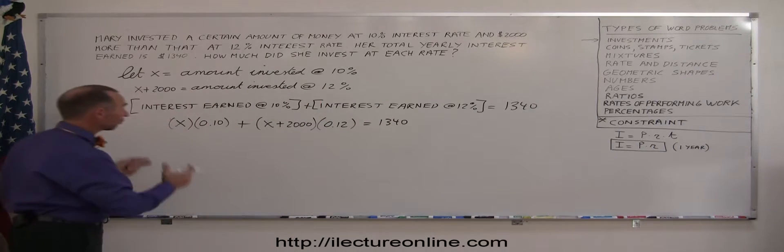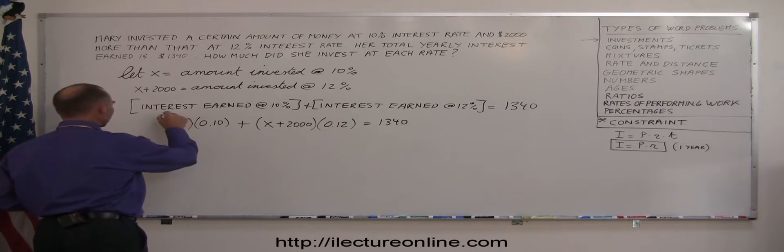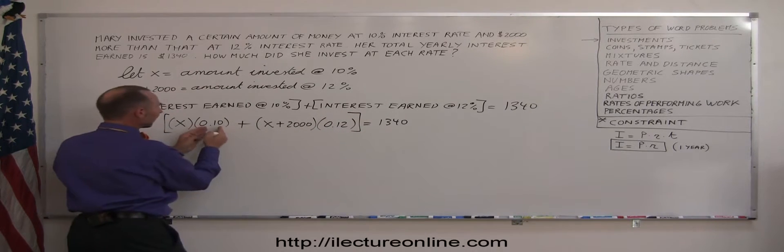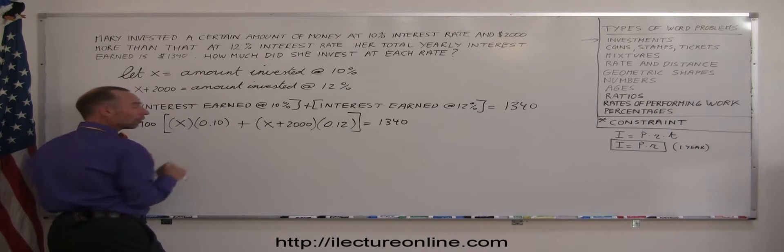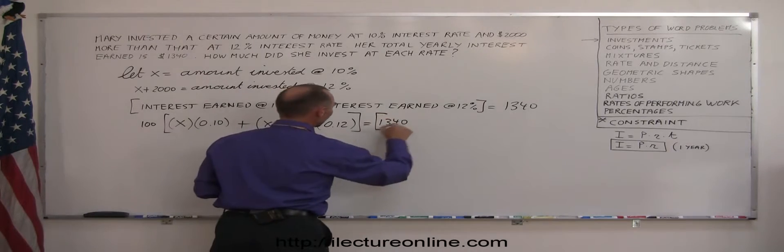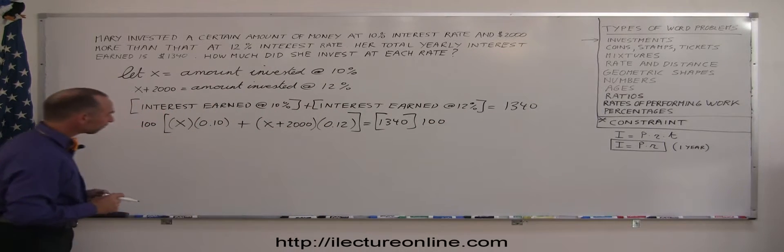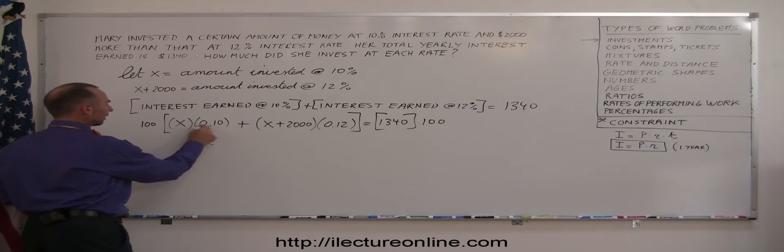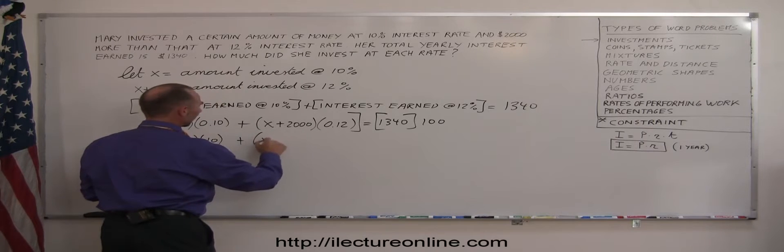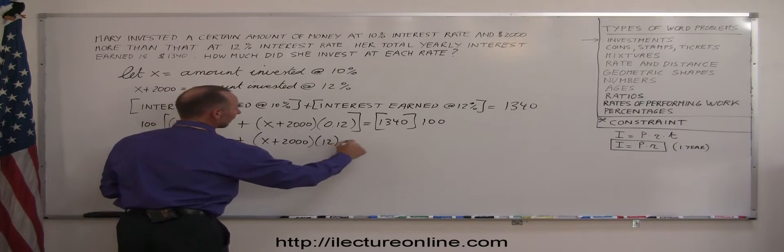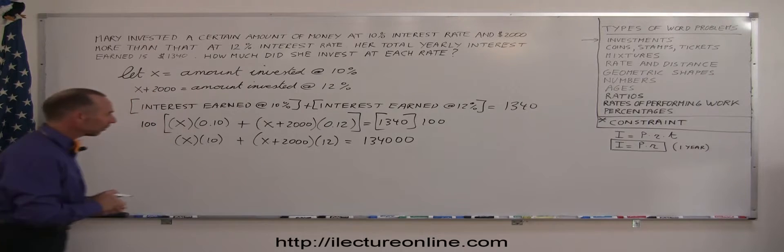Now you can see that you have just a simple linear equation that we can solve for x. The first thing we want to do is get rid of these decimal places. That means we're going to multiply each side by 100. If I multiply this by 100, the decimal moves over two places. Since I've multiplied the left side by 100, I must do exactly the same to the right side. So 100 times this becomes x times 10, plus 100 times this becomes x plus 2,000 times 12, and 100 times 1,340 means I simply add two zeros. Decimal place is gone.